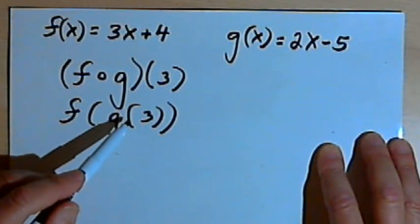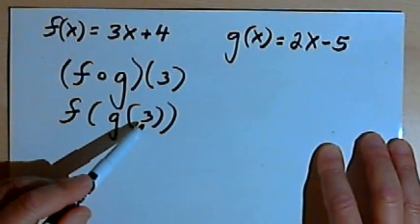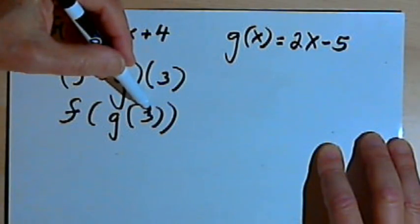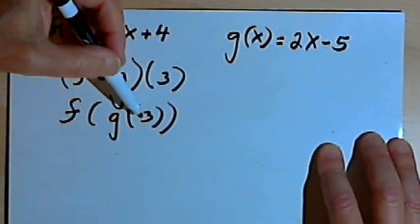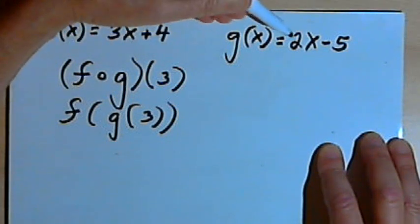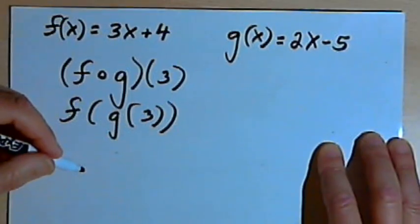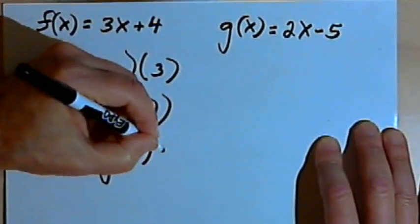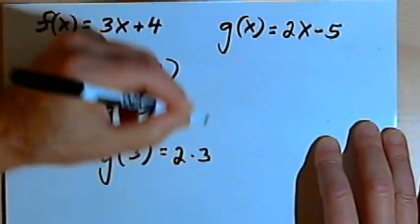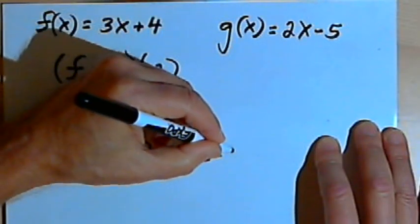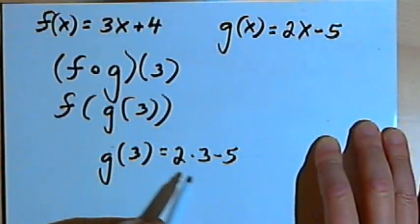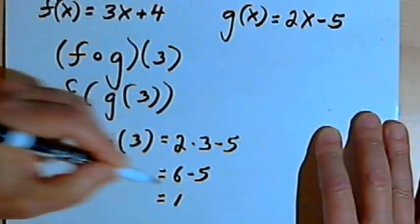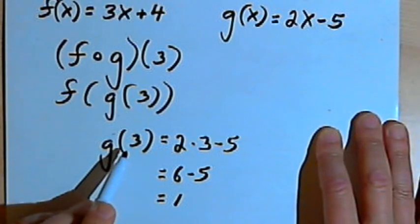Working from the innermost parentheses, I'm going to take that g of 3 and figure out what it is. I know that g of x is 2x minus 5. So g of 3 would mean that I'm going to take that 3 and put it wherever I have an x in my g of x. So g of 3 is going to be 2 times 3, since I originally had 2 times x, minus 5. And 2 times 3 is 6, minus 5. 6 minus 5 is 1. So g of 3 is 1.